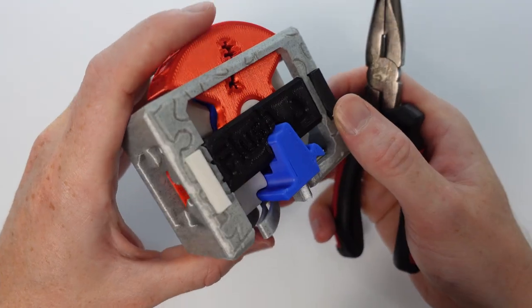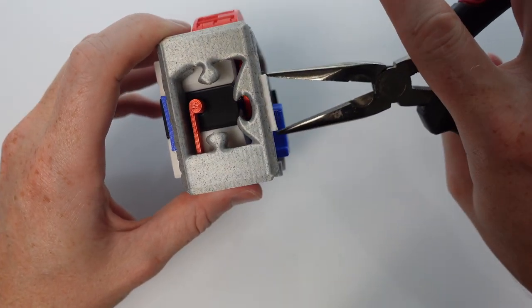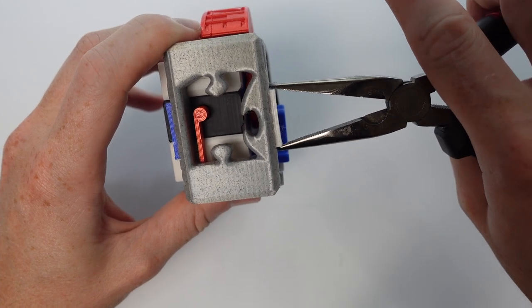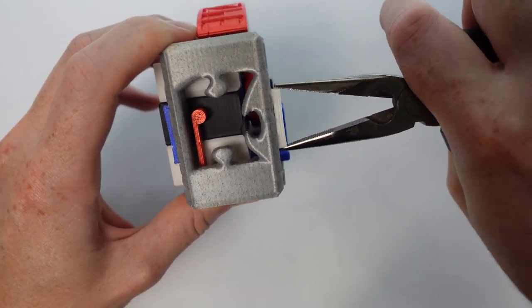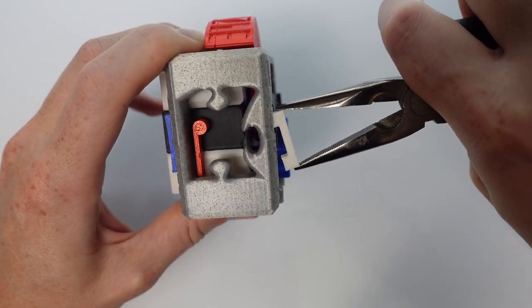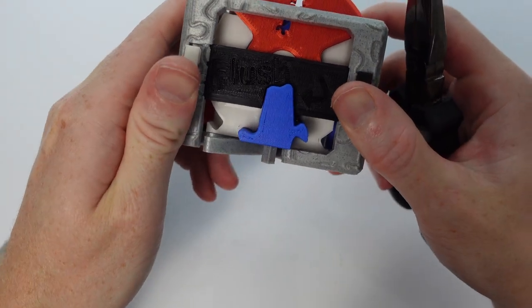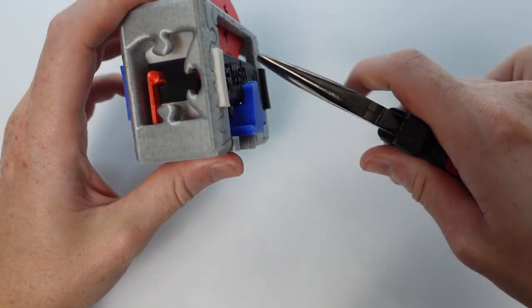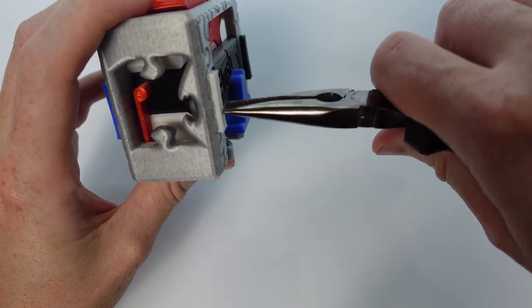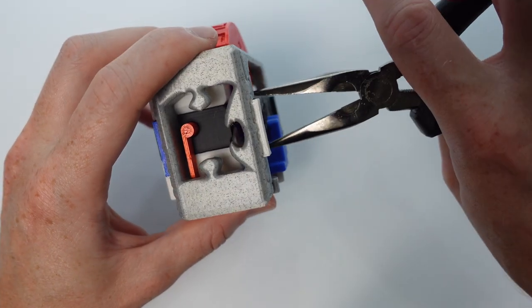A couple tips when you go to remove these: use the pliers and go this way because of the way they're printed. This gets them in and out pretty easily. If you start trying to take them in and out with your pliers this way, you're going to fray the print lines.